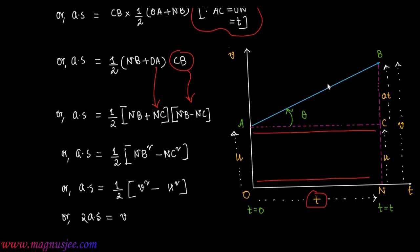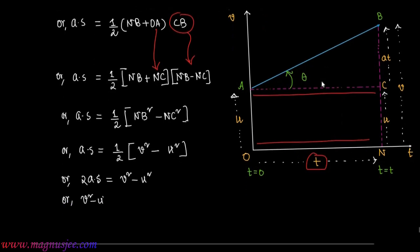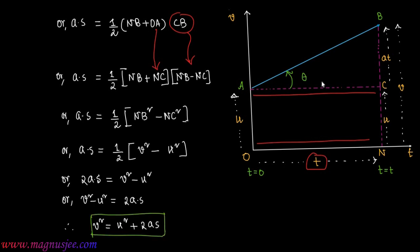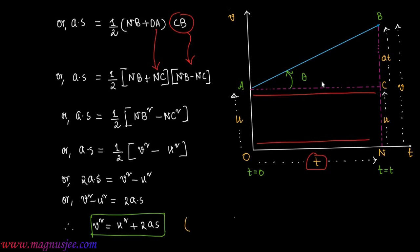Therefore, 2a·s = v² − u², or v² = u² + 2a·s. Hence this equation of motion is proved graphically.